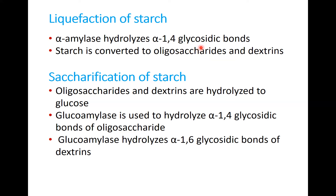After we convert this long chain of starch to oligosaccharides and dextrin, the next step is saccharification of starch. In this saccharification step, the oligosaccharides and dextrin are hydrolyzed to glucose. So these are two steps that happen using two different enzymes.